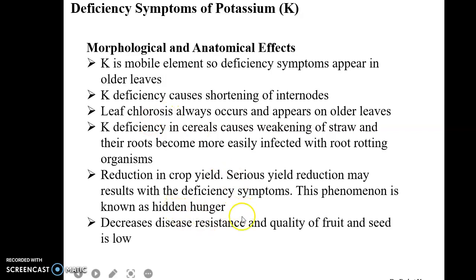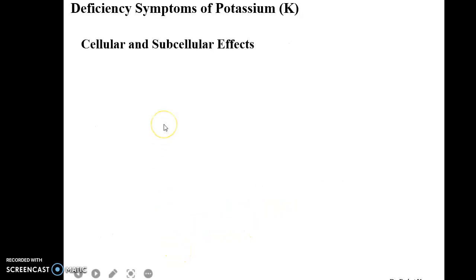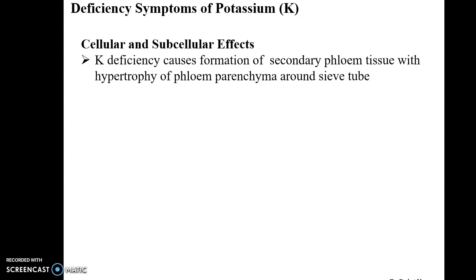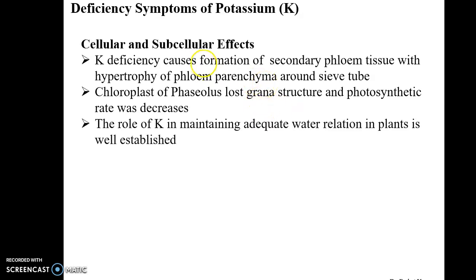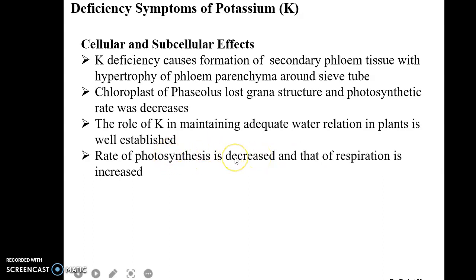Decreased disease resistance and low quality of fruit and seed are also associated with potassium deficiency. At the cellular and subcellular level, potassium deficiency causes formation of secondary phloem tissues with hypertrophy of phloem parenchyma around sieve tubes. Chloroplasts in Phaseolus lost their grana structure and photosynthetic rate was decreased, according to our study. The role of potassium in maintaining adequate water relations in plants is well-established.